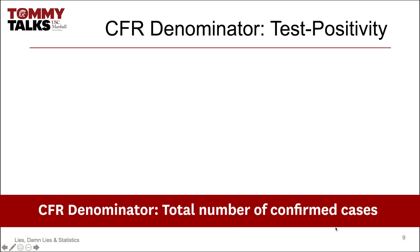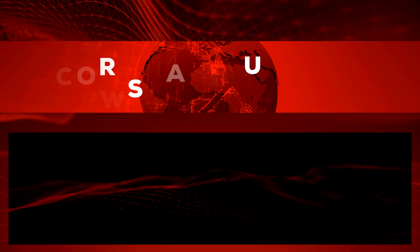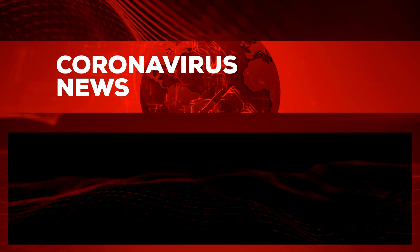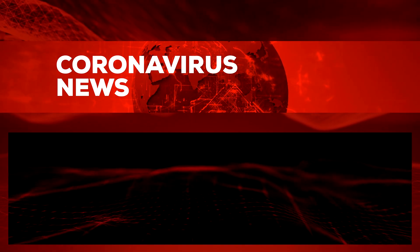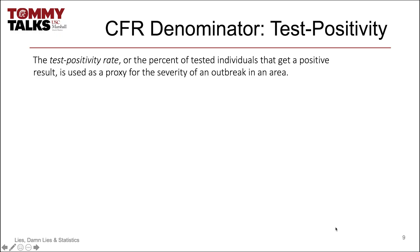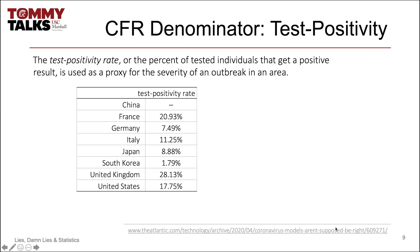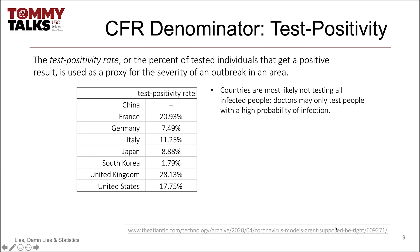Now let's take a look at the CFR measure denominator, or the total number of confirmed cases of the virus. There's a lot of press around this number, given its importance. In order to locate confirmed cases, a lot of testing needs to be done. But who is being tested? Once testing is done, the test positivity rate can be found — simply the percent of tested individuals who get a positive result. Large differences are apparent once again between countries. The United Kingdom has over a 28 percent test positivity rate, whereas South Korea's rate is just under two percent.